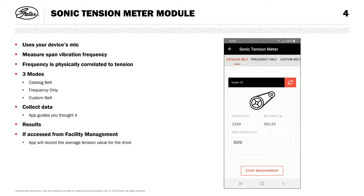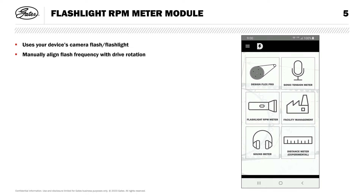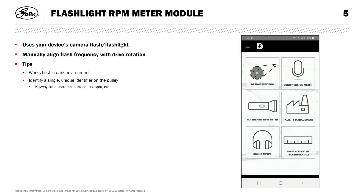Moving on to the next module. The Flashlight RPM Meter module allows for measuring drive rotational speed by activating your device's camera flash as a strobe and allowing you to manually align the speed with the rotational speed of the pulley. Two tips: this module works best in a dark environment. The phone's light is only so bright and can only flash and dim so quickly, so the darker the environment, the easier it'll be. Second, you'll need to select a single unique identifier — something that only appears once as the pulley completes a full rotation, such as a keyway, label, or surface imperfection.